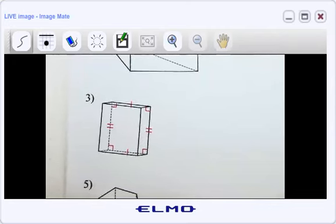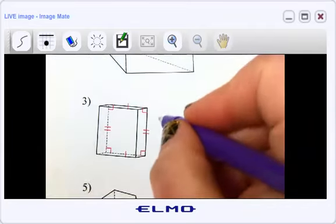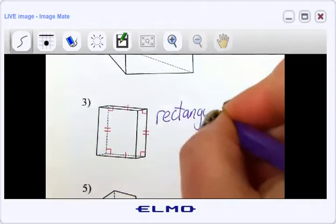But hopefully you can see in this image two parallel bases and then they are connected by a series of rectangles. So this thing, again, we call this a rectangular prism.